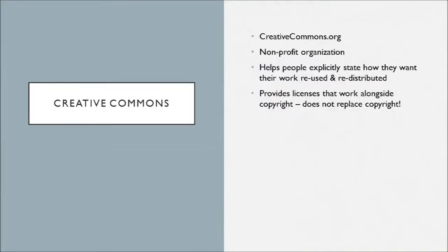Creative Commons is a nonprofit organization that helps people explicitly state how they will share what they've created. They offer straightforward and easy-to-use copyright licenses to provide a standardized way to give the public permission to share and use creative work. These licenses work alongside copyright — you have copyright over anything you make tangible as long as you don't sign those rights away. So the Creative Commons license doesn't replace copyright; it instead works with copyright to help you and other creators control your work, especially on the internet.